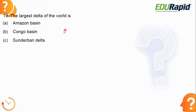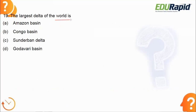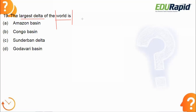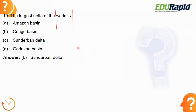Next: what is the largest delta of the world? Please note the keywords — 'world' and 'largest delta.' They are not asking about India; they are asking about the world. The answer is the Sundarban Delta. The largest delta of the world is the Sundarban Delta.